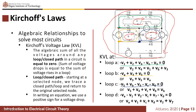For the last loop, the outer loop D, starting with this node: negative VB minus V1 plus V2 minus VC plus V7 minus VD equals zero.